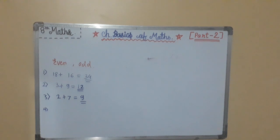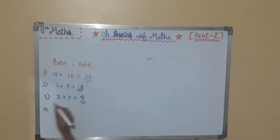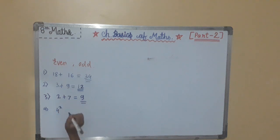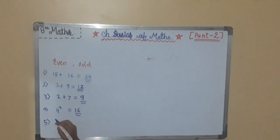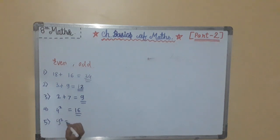Property 4: the square of an even number is even. For example, 4 squared equals 16, and 16 is an even number. Property 5: the square of an odd number is odd. For example, 9 squared equals 81, and 81 is an odd number.